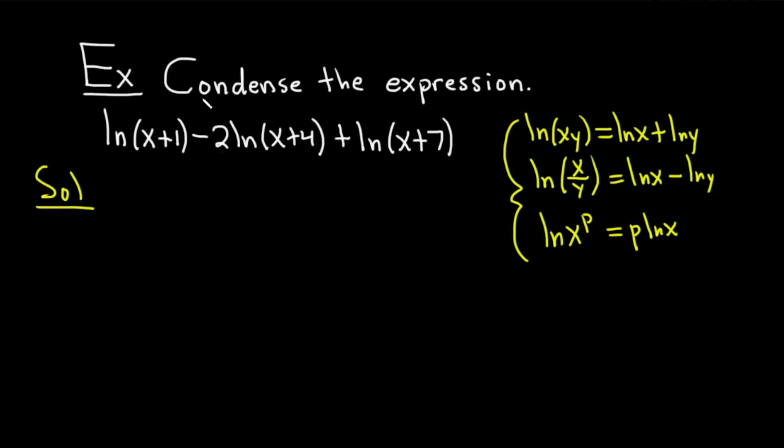So let's just work left to right. We've got a minus sign that tells us we should be using the quotient rule. However, there's a number in front of this second log. So let's go ahead and rewrite everything and bring that number upstairs using the power rule. This is the natural log of x plus 1 minus the natural log of x plus 4, and then you can bring that to upstairs. So it becomes x plus 4 squared and plus the natural log of x plus 7.